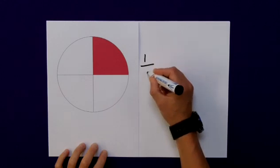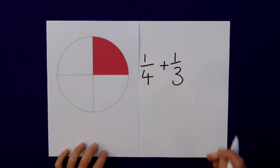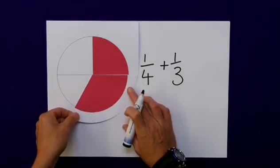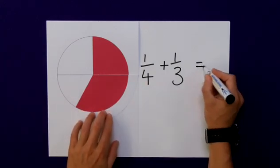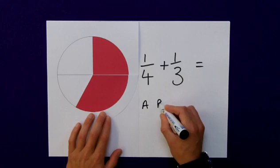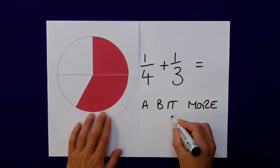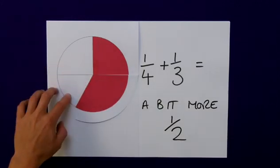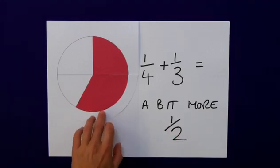My picture representation once again. So, 1 quarter plus 1 third. Well, here I have my quarter. If I add my third to that, I can see that I get an equivalent of just a little bit more than 1 half. Now, clearly, whilst this is a good representation of how much I have, that answer of a bit more than 1 half isn't really good enough.